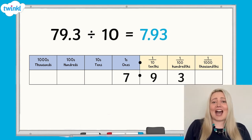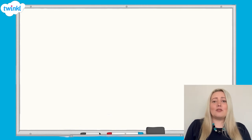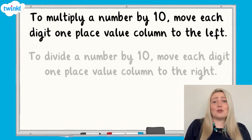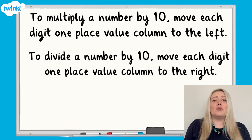Remember, it doesn't matter how many digits a number has. If we multiply a number by 10, we move each digit one place value column to the left. And if we divide a number by 10, we move each digit one place value column to the right.